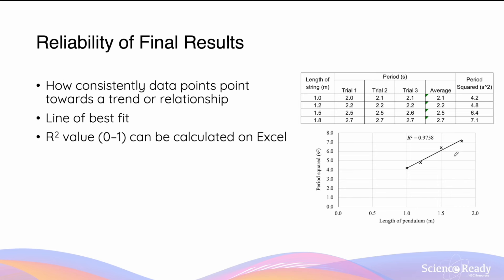A quantitative way to assess the reliability of results and how they fit the general trend is using the R² value, which can be calculated in Excel. The R² value ranges between 0 and 1. An R² of 0 means the data points don't fit any general trend — no correlation between the two variables. An R² of 1 means the data points are completely collinear and perfectly on the same straight line. In this example, I have an R² value of 0.9758, which is quite close to 1, so these data points are highly reliable.